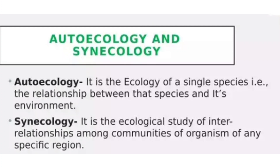There are two main important aspects of ecology: autoecology and synecology. Autoecology is concerned with the study of an individual species and its population. When studying autoecology of a particular species, an ecologist studies its behavior and adaptation to environmental conditions at every stage of that individual's life cycle. Autoecology is otherwise called species ecology.